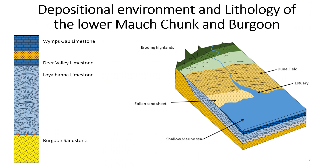Now I am going to go over the depositional environment and lithology of the lower Mauch Chunk carbonates and the Bragoon sandstone. I'm going to start with the Bragoon sandstone because that was deposited first. The Bragoon sandstone is predominantly a medium to coarse grain, medium to light to very light gray sandstone. It was deposited in early to middle Mississippian time in an alluvial deltaic sand plain. Then in the middle to late Mississippian, the Bragoon sandstone was uplifted in northwestern Pennsylvania, which led to tilting and erosion of this sandstone to the north. In Laurel Caverns, iron concretions mark the boundary between the Loyalhanna limestone and the Bragoon sandstone. Cavern development does not occur beneath this layer that contains the iron concretions.